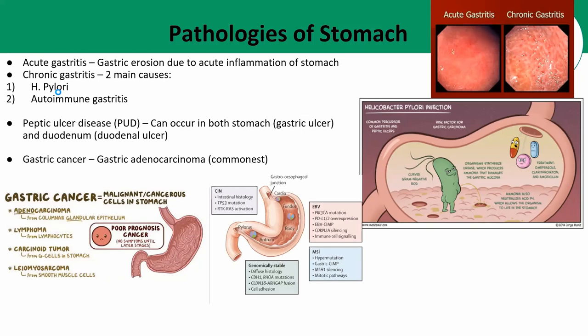Lastly, let's talk about gastric cancer. The most common type is gastric adenocarcinoma, which has early, aggressive spread with lymph node and liver metastasis. For MD2s and above, the lymph node that gastric adenocarcinoma commonly metastasizes to is usually at the left clavicle — known as Virchow's node.